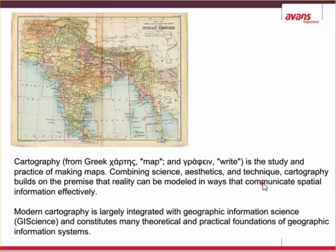For example, in one of your first assignments for the project, students just threw everything together — and while that certainly has a lot of information, it's maybe not the best way to communicate visually. Old-fashioned cartography used paper maps that people would draw around the world, but modern cartography uses geographic information science, or GI science, and has theoretical and practical foundations for geographic information systems.